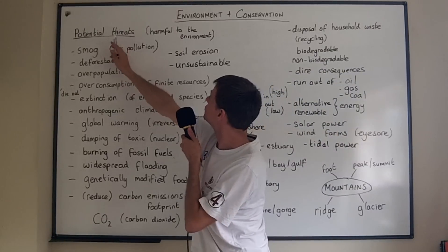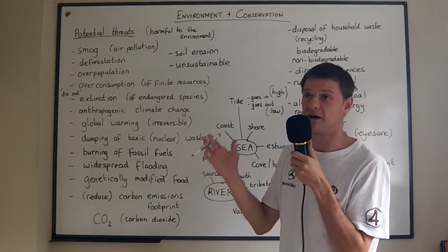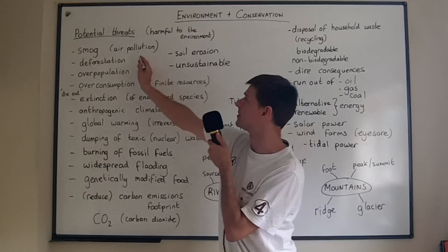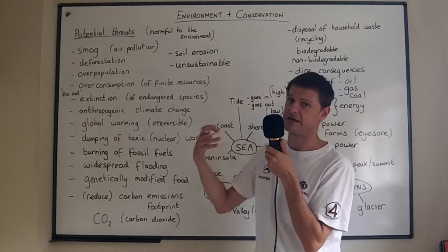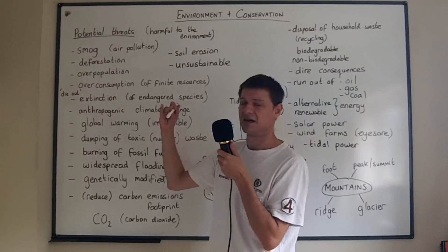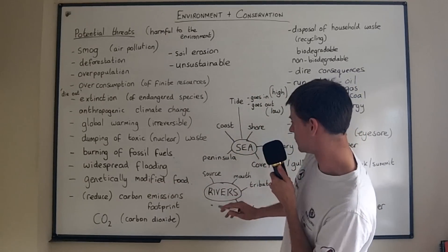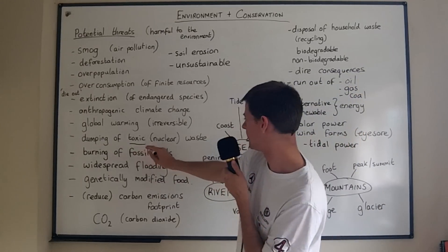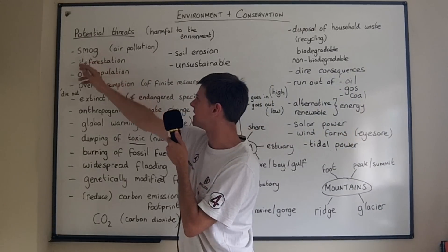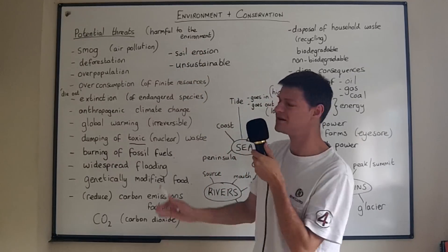The first potential threat to the environment is smog, which is a combination of two words: smoke and fog. So it's air pollution. You get a lot of smog in big cities where there's a lot of traffic and factories, and there are a lot of toxic gases which go up into the atmosphere. Toxic means poisonous, so if you get a lot of poisonous gases in the air, you get a lot of smog. It's obviously harmful to the environment.